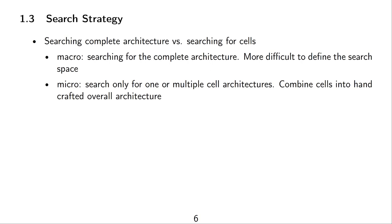One thing to note about the search strategy is that people often distinguish between macro-search and micro-search — that means searching complete architectures versus searching for individual cells or building blocks. Micro-search means you're searching for building blocks or cells, and then you combine these cells that you found into a handcrafted overall architecture.